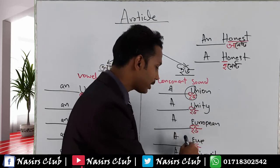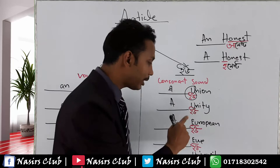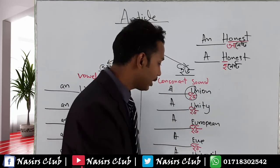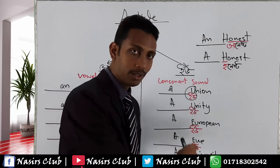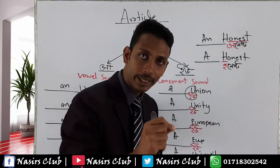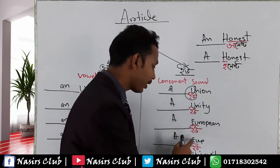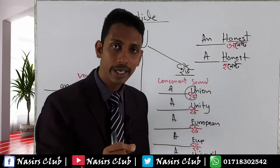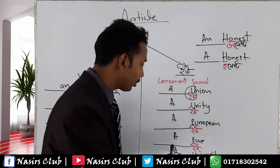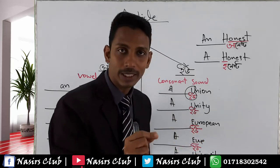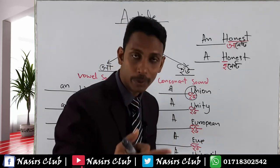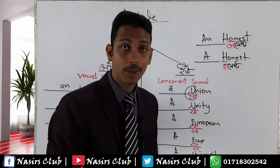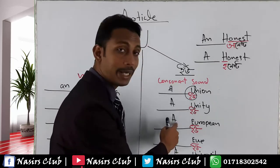Here is the example: 'European'. The letter U is there, but the sound is 'yu' — which is a consonant sound. If students ask this question, the answer is: the first sound of 'European' is 'yu', which is spelled E-U-R-O-P-E-A-N. The sound is 'yu', and 'yu' is a consonant sound.